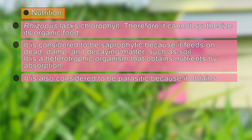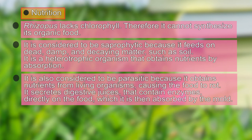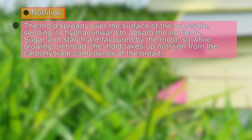Rhizopus is also considered parasitic because sometimes it grows on living organic matter, secreting digestive juices containing enzymes that act directly on the food, which is then absorbed by the mold. The mold spreads over the surface of the substrate, sending its hyphae inward to absorb nutrition. Sugars and starch are favored by the mold.